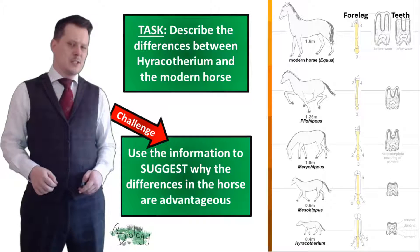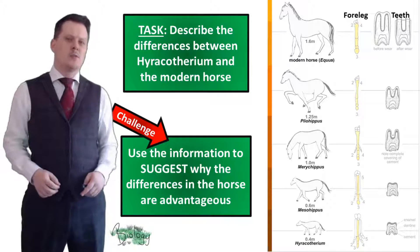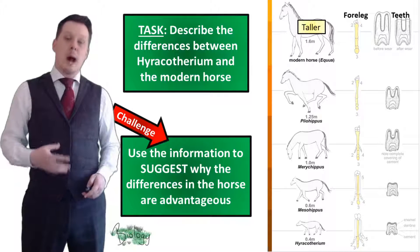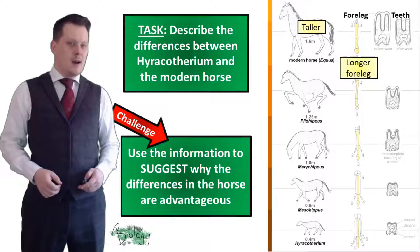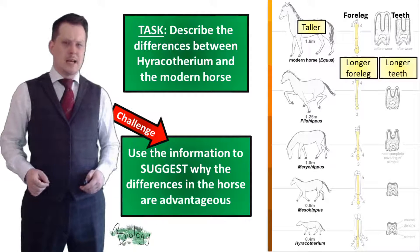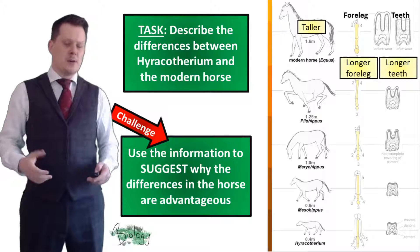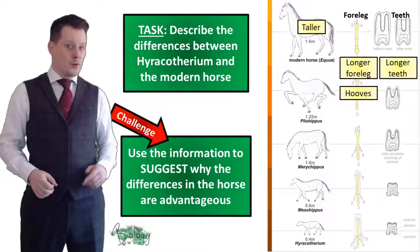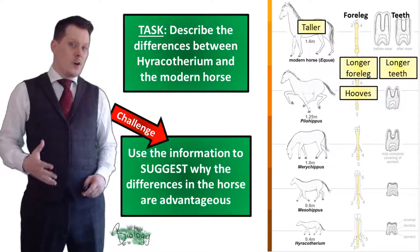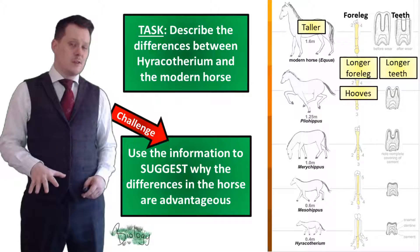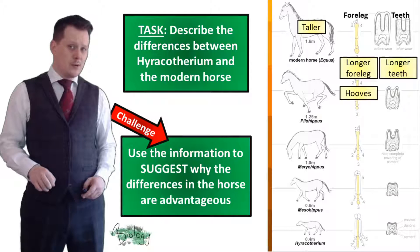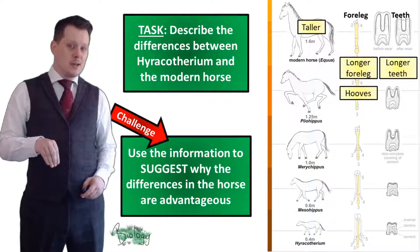Let's look at some of these differences. The modern horse is taller, has a longer foreleg, longer teeth, and has hooves. On the Hyracotherium, at the bottom of its legs you can see something that resembles a foot, and as you move up the fossil record this becomes more tightly closed to form a hoof.